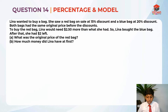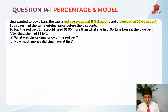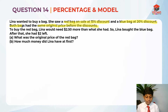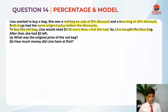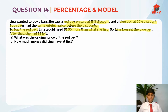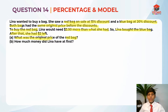Now that we've read the question, we should highlight the key information. She saw a red bag on sale at 15% discount and a blue bag at 20% discount. Both bags had the same original price before the discounts. To buy the red bag, Lena would need $2.50 more than what she had — so basically she has a shortage of $2.50. She bought the blue bag because she didn't have enough money for the red bag. After that, she had $2 left — an excess of $2. They are asking us what is the original price of the red bag.